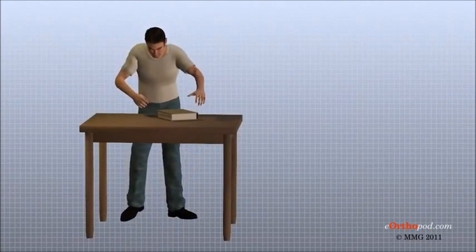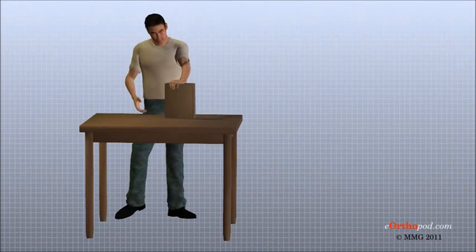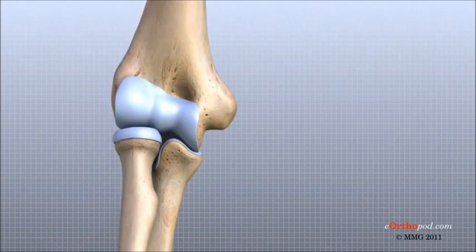Part of what makes us human is the way we are able to use our hands. Effective use of our hand requires a stable, painless elbow joint. The important structures of the elbow can be divided into several categories.